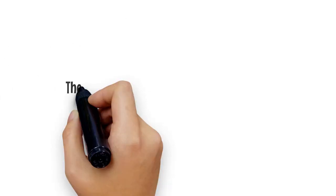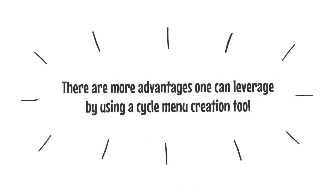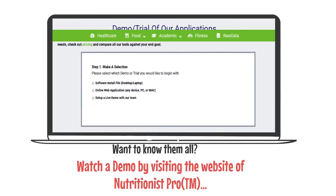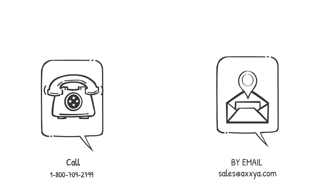There are more advantages one can leverage by using a cycle menu creation tool. Want to know them all? Watch a demo by visiting the website of Nutritionist Pro TM. Learn how easily, quickly, and flawlessly you can create cycle menus. Call 1-800-709-2799 or send an email to sales@axiat.com for additional information.